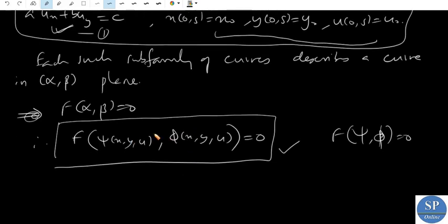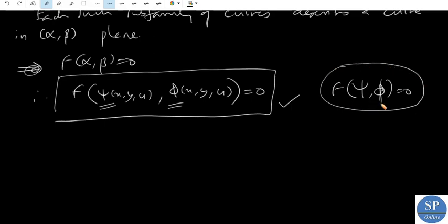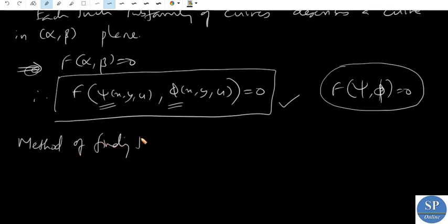Our aim is to find the solution; specifically, our aim is to find these two functions ψ and φ. Once we have ψ and φ, we will have the solution as f(ψ, φ) = 0. Next, we describe the method of finding the surfaces ψ and φ.